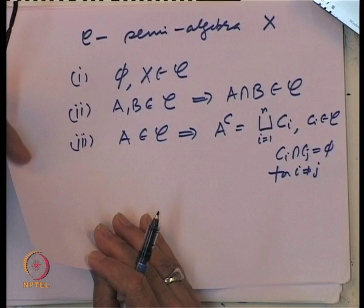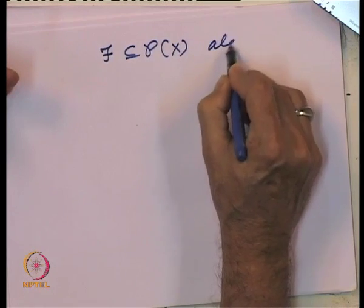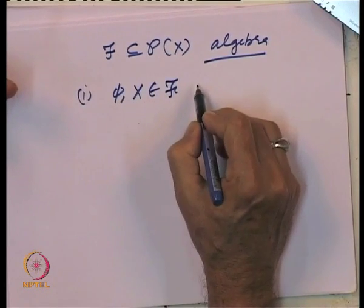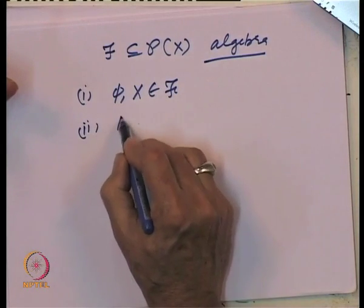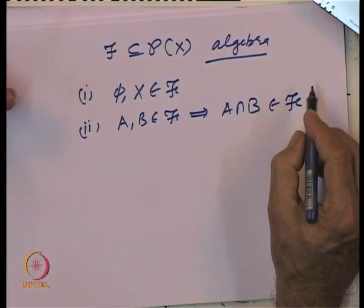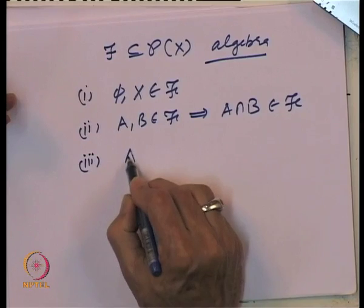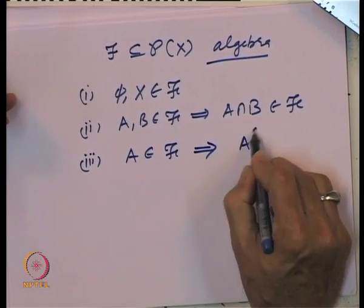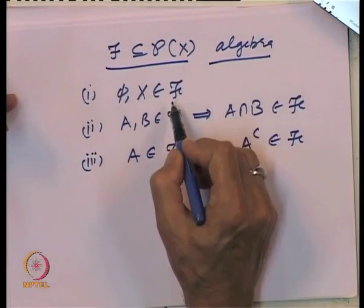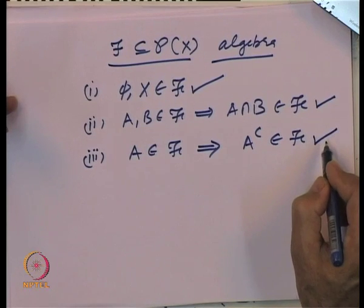We also looked at what we called the algebra of subsets of a set X. A class F of subsets of X is called an algebra if it has the following properties: the empty set and the whole space belong to F; A and B belonging to F implies A∩B belongs to F; and whenever a set A belongs to F, this implies A complement also belongs to F. So an algebra is closed under intersections and complements and includes the empty set and the whole space.